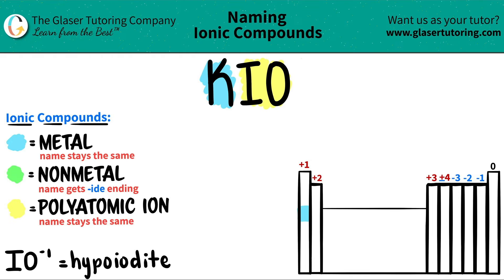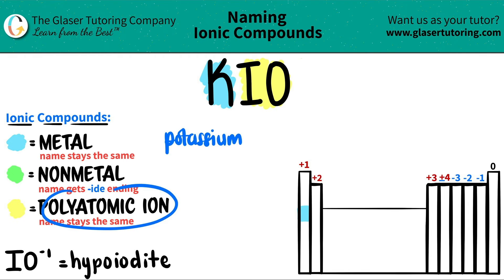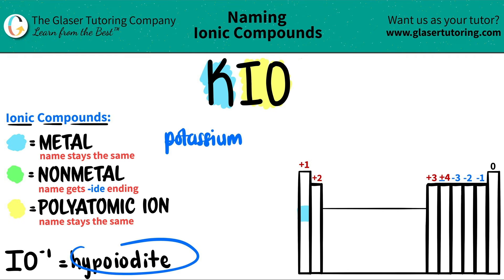Now we've got everything accounted for, so let's start naming. The metal name is always going to stay exactly the same, so K for potassium is just going to be potassium. And then we have a polyatomic ion — those names always stay exactly the same, that's why you've got to memorize them. So IO is hypoiodite.